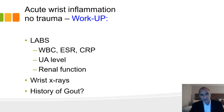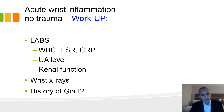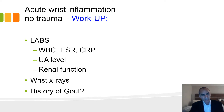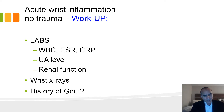The workup, based on what we've seen, should include: labs — white count, sed rate, CRP, uric acid level, and renal function. Wrist x-rays should be done, and you should find out if there's a history of gout.